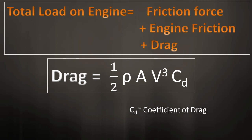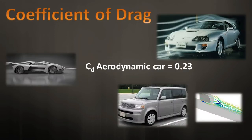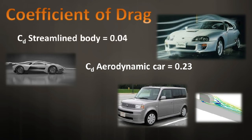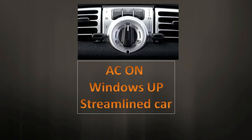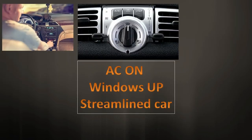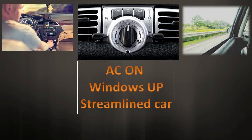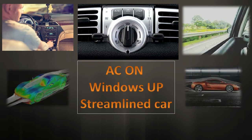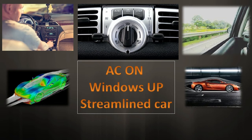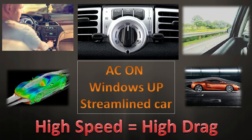The coefficient of drag, Cd, depends on the outer shape of the car. A streamlined body has a Cd of 0.04, whereas a box-shaped car could have a Cd of almost one. Now, when you turn the AC on, the first thing you do is close the windows. This makes the vehicle more streamlined, reducing the Cd by a finite amount, which reduces the drag force — and at higher speeds, the drag is very high.